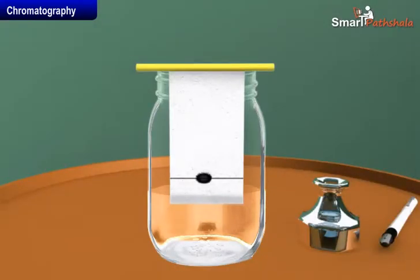The ink that we use has water as the solvent and the dye is soluble in it. As the water rises on the filter paper, it takes along with it the dye particles. We will see different colors in filter paper.